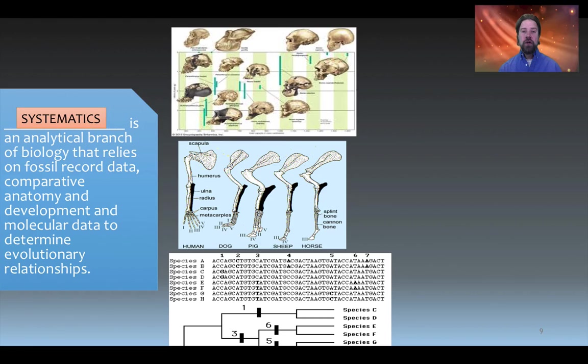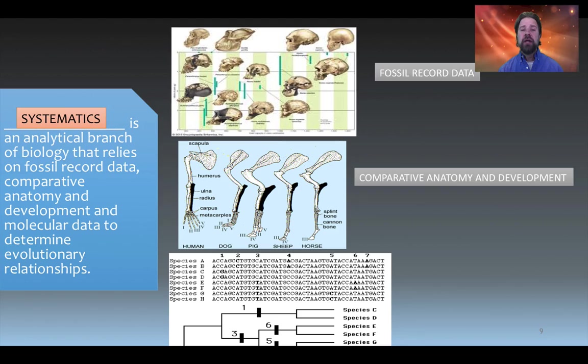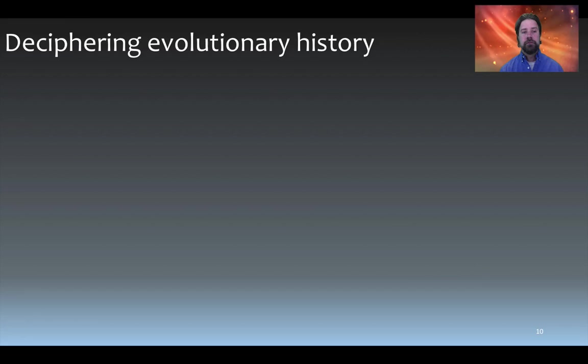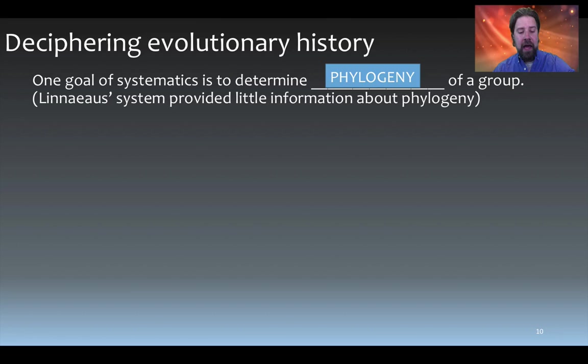Systematics leads us to what we call phylogeny — the evolutionary history of a particular organism. Systematics uses fossil record data, comparative anatomy and development, and molecular data to determine evolutionary relationships. A key goal of systematics is to determine that phylogeny, and phylogeny and evolutionary history are essentially the same concept — one is simply a more technical-sounding term.